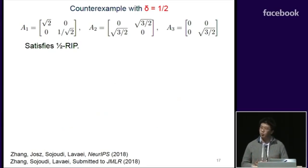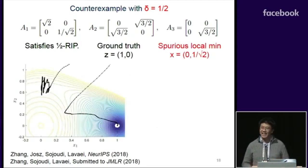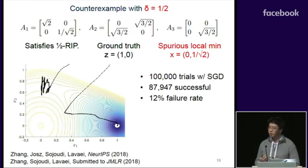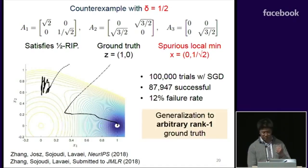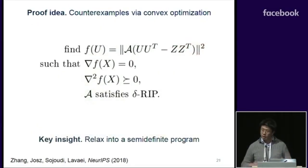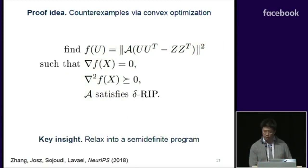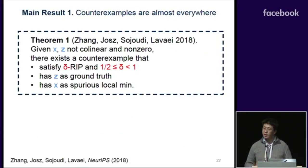Let's talk about some of these counterexamples. We have a counterexample with the RIP constant of one-half. Consider these matrices here. Simply running stochastic gradient descent, we see that it really does get stuck at a spurious local minimum. Running this over 100,000 times, we see a failure rate of 12%. We can generalize this into an arbitrary length vector, and the technique we use is to pose the problem of finding a counterexample as a convex optimization problem.